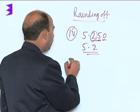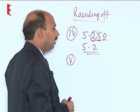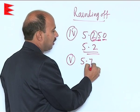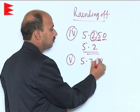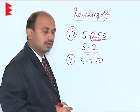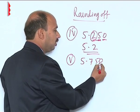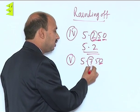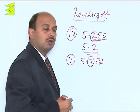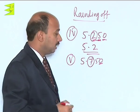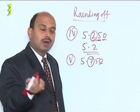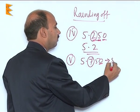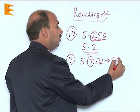Suppose you take the fifth example: 5.750. Here the trailing digit is 0, but the preceding digit is 5, which is odd. In that case you raise it by 1, so this is rounded off to 5.8.